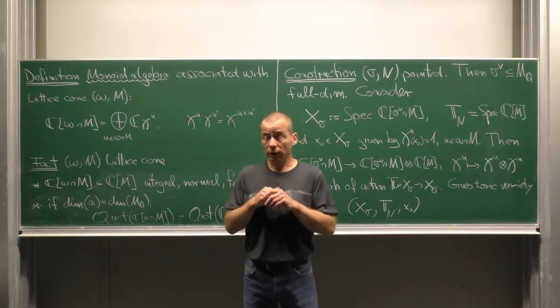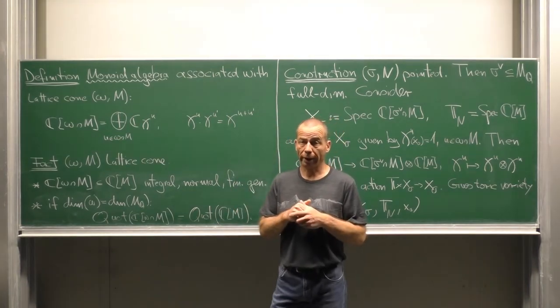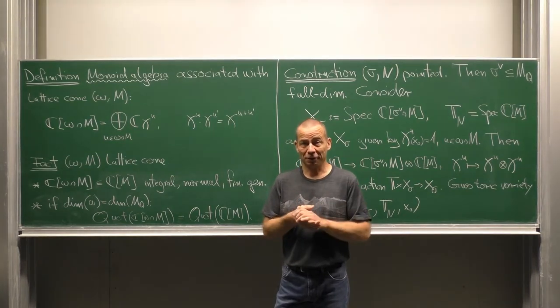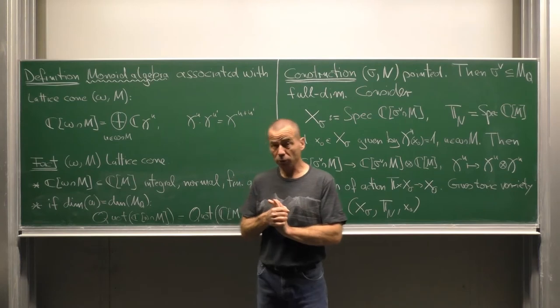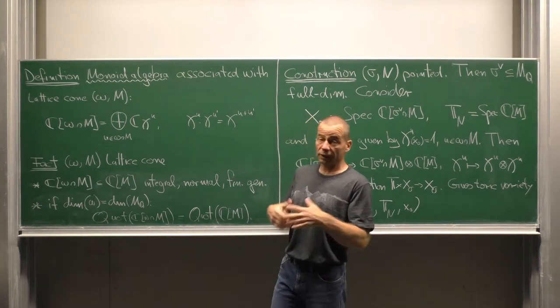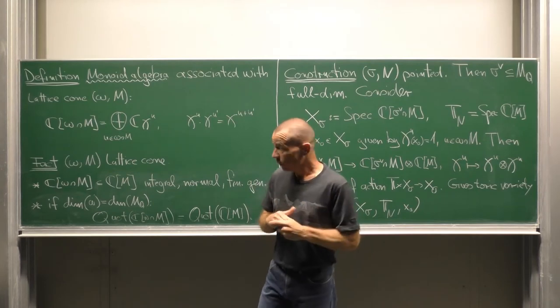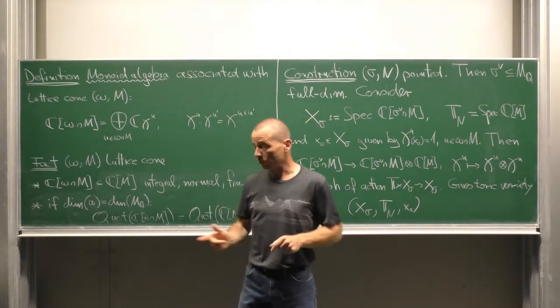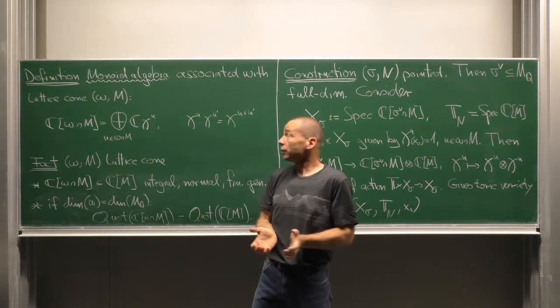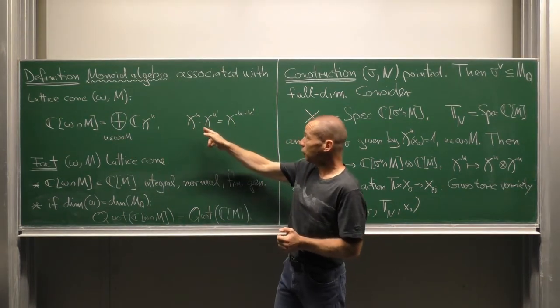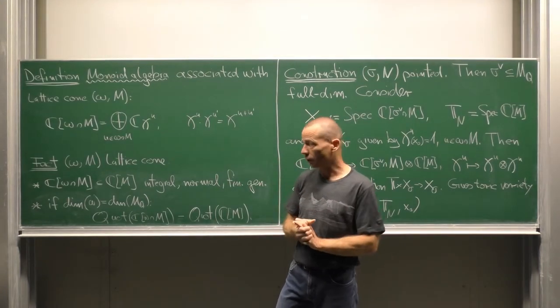The monoid algebra associated with a lattice cone is the cone monoid. That means the vector space, it is the free vector space of all the symbols chi^u, where u stands from the cone monoid. And the multiplication is defined by chi^u times chi^u' is chi^(u+u').